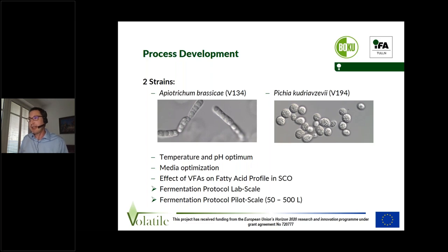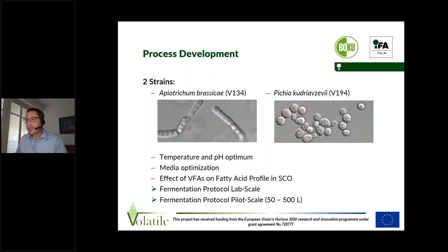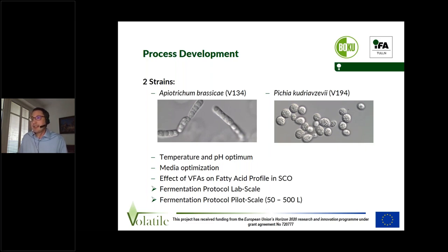They came up with four strains particularly suitable for our purposes, and we then chose two strains to look at in more detail: Apiotrichum brassicae and Wickerhamomyces anomalus CVI. For these strains we determined the temperature and pH optimum and did some media optimization. We wanted to develop a pure mineral medium, but were not yet fully successful, so we mainly work on a medium based on yeast extract and peptone. We also looked at the effects of volatile fatty acids on the fatty acid profile in single-cell oil.